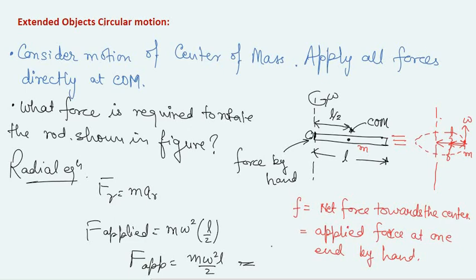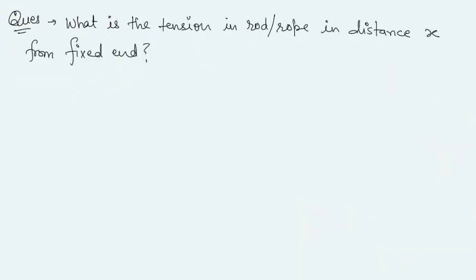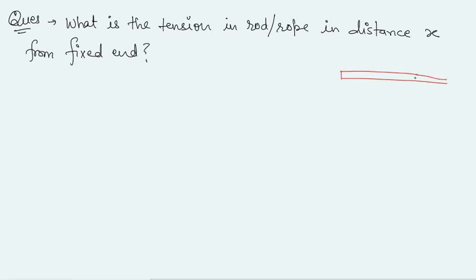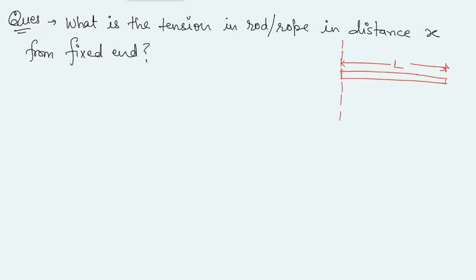Using this concept, let us look at another problem. The problem is: what is the tension in the rod at a distance x from the fixed end? We have a rod of length L with one fixed end. At a point located a distance x from the fixed end, we need to find the tension in the rod at that cross-section.